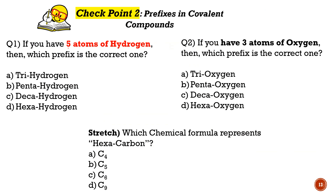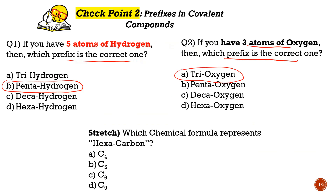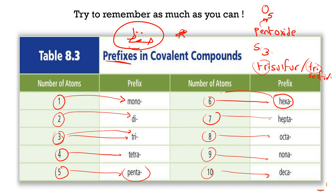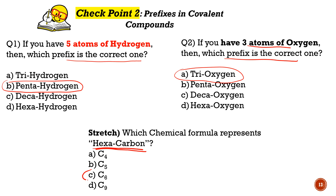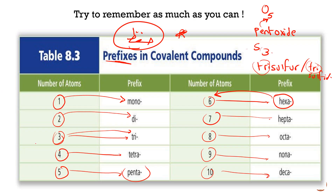Now check: if you have five atoms of hydrogen, which is the correct name? Five is penta, so you choose 'pentahydrogen.' If you have three atoms of oxygen, three is tri, so you choose 'trioxide.' Which chemical formula represents hexacarbon? Hexa means six atoms, so it should be C6.